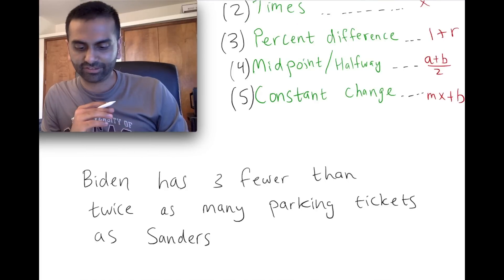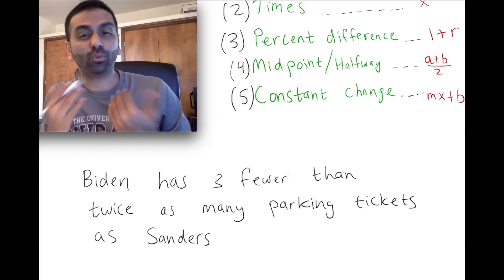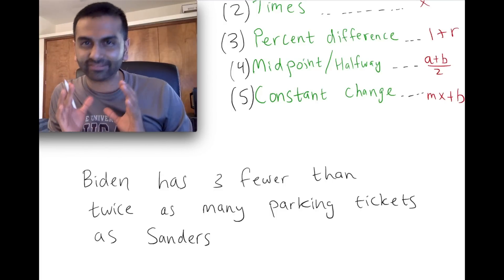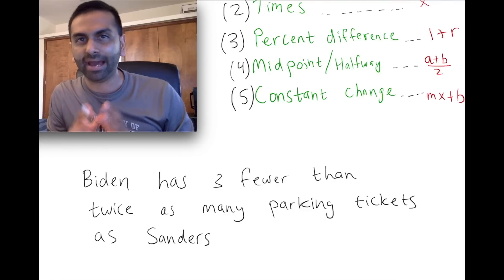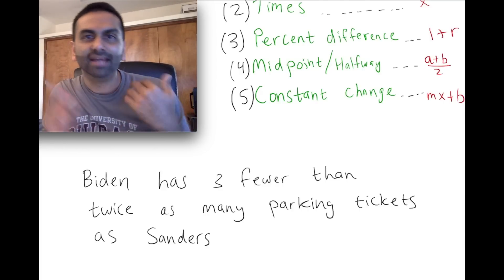This sentence in English says Biden has three fewer than twice as many parking tickets as Sanders. If we wanted to translate that sentence from English into math, what should we do?